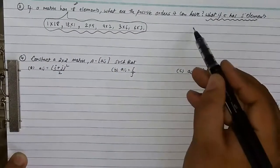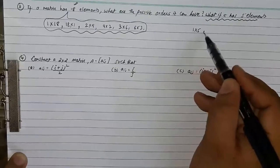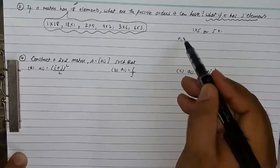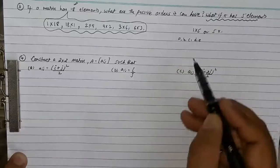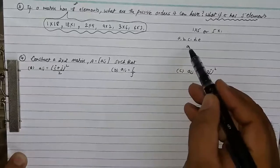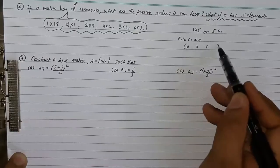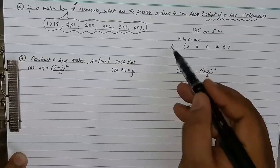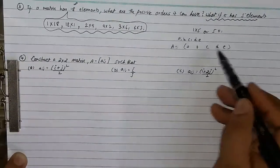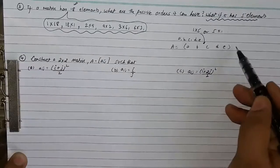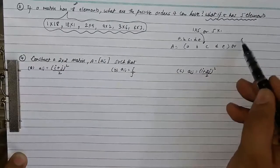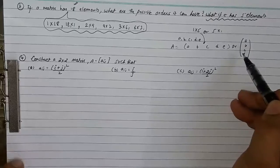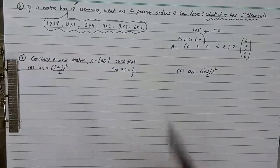If we have 5 elements, we can arrange them as 1 into 5 or 5 into 1. For example, if we have elements a, b, c, d, e, we can write a matrix with 1 row and 5 columns: [a b c d e]. Or we can write a matrix with 5 rows and 1 column. So we can arrange those 5 elements in these two ways.